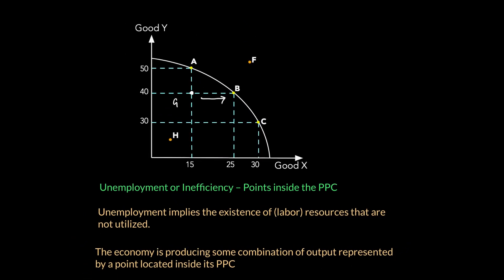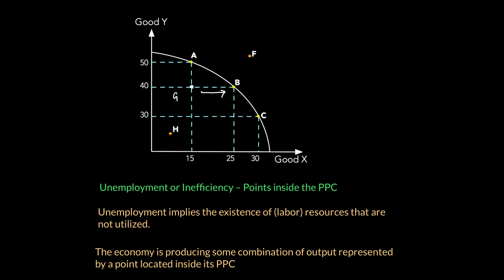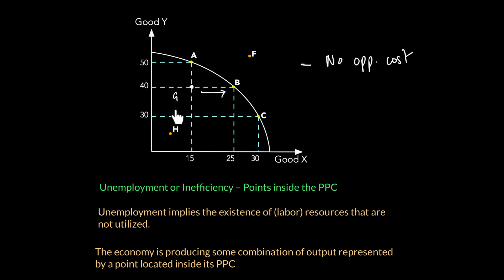Points below the PPC indicate unemployment and inefficiency. If you are on the curve, resources are fully employed; if you are below the curve, unemployment exists. Any point inside the PPC means the economy could achieve more output of both goods without opportunity cost. The further a point is from the PPC toward the origin, the higher the unemployment. Points closer to the PPC indicate better resource utilization and lower unemployment.